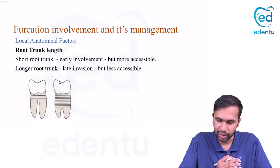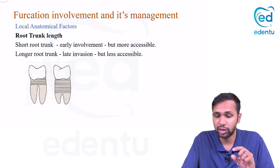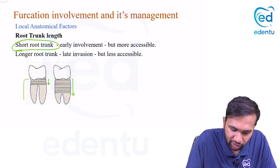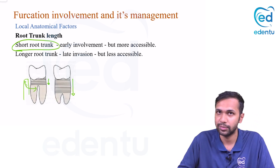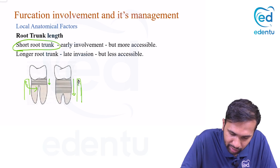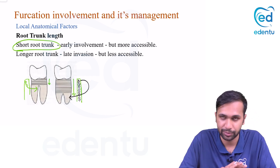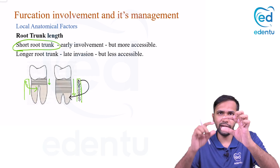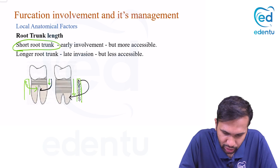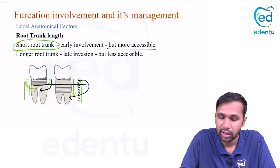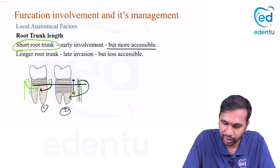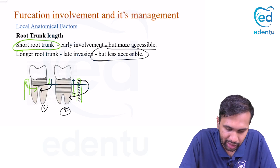Regarding root trunk length: if the root trunk length is short, with very little periodontal bone loss the furcation region can be involved. If the root trunk length is long, you need much more periodontal bone loss to involve the furcation. With a short trunk the furcation is found more coronally and is more accessible, whereas with a long trunk, once involved, it is very less accessible and has a very poor prognosis.